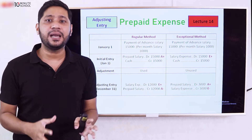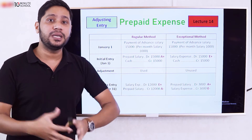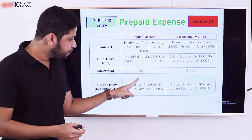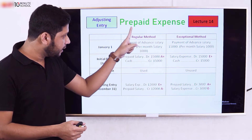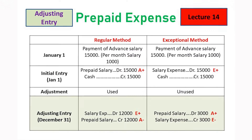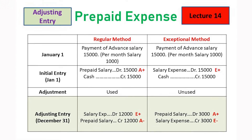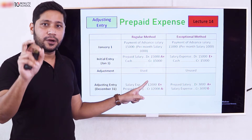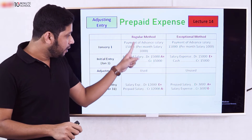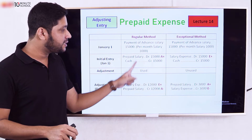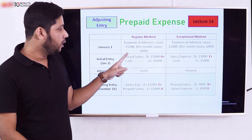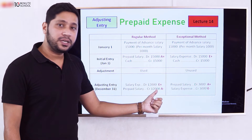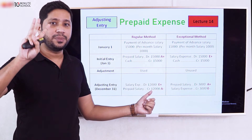Using the regular method, the salary expense eventually comes to $12,000 on the accrual basis. The prepaid salary balance is calculated as: $25,000 prepaid salary minus $22,000 used equals a $3,000 prepaid salary balance remaining.